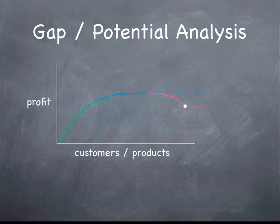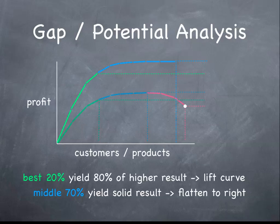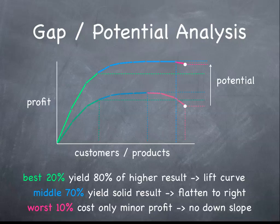When you do gap analysis to determine the full potential for your business in an improvement project, you will find a couple of things. One is you will want to improve the profits that you do with your best customers or products — in other words, you want to lift the entire curve up. Second, you want to flatten the curve out to the right, ensuring that as many of the remaining customers as possible are in the positive break-even territory. And if you can't avoid it, at least you want to make sure that the downslope from those profit-takers is minimized. All of these three contribute to the potential, which is far higher than just the top of the original whale curve.